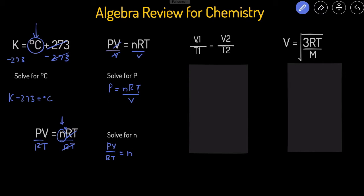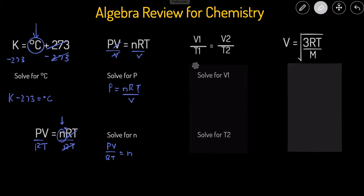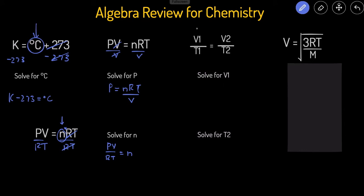Next we have Charles' Law: V1 over T1 equals V2 over T2. The first problem is to solve for V1. To isolate V1, we need to get rid of T1. Currently V1 is being divided by T1, so to get rid of division we do the opposite — multiplication. We multiply both sides by T1, and this T1 cancels out, leaving us with V1 equals V2 over T2 times T1.